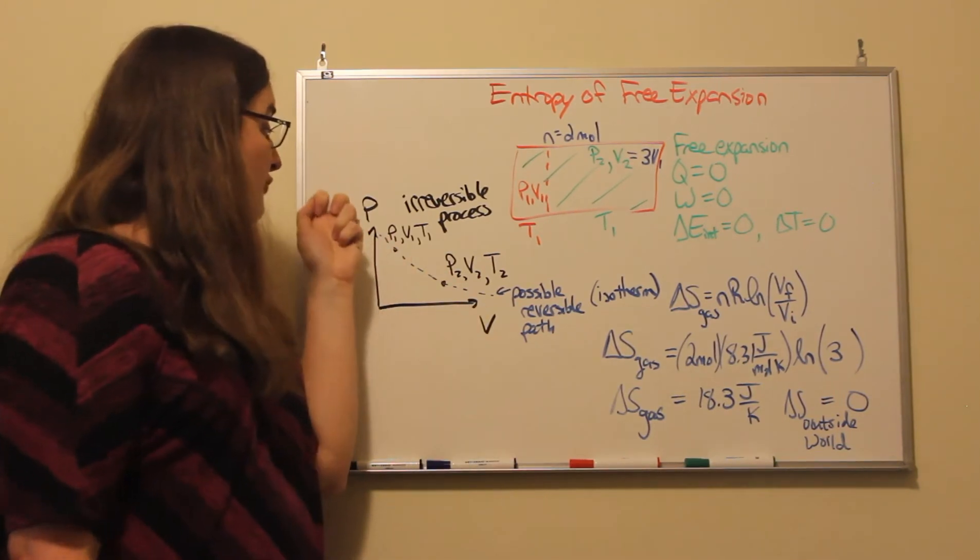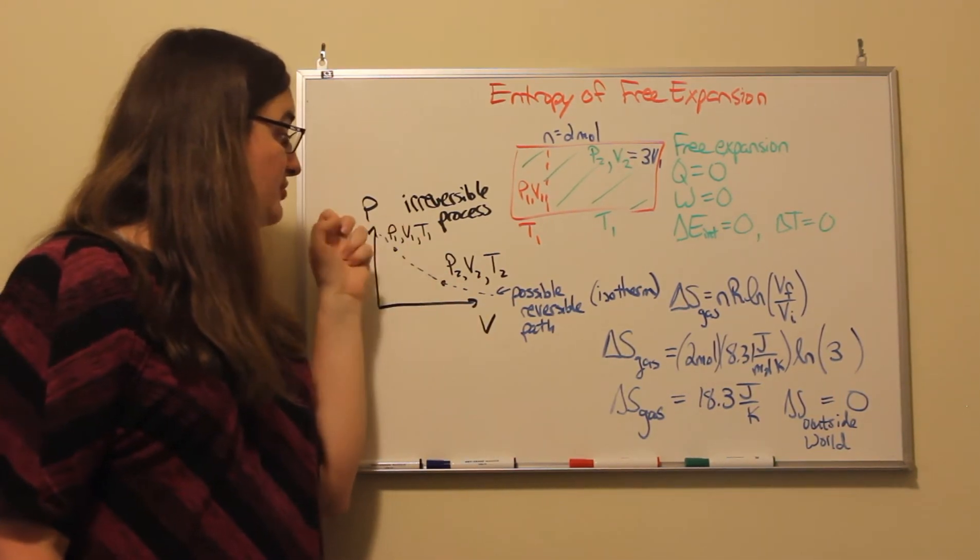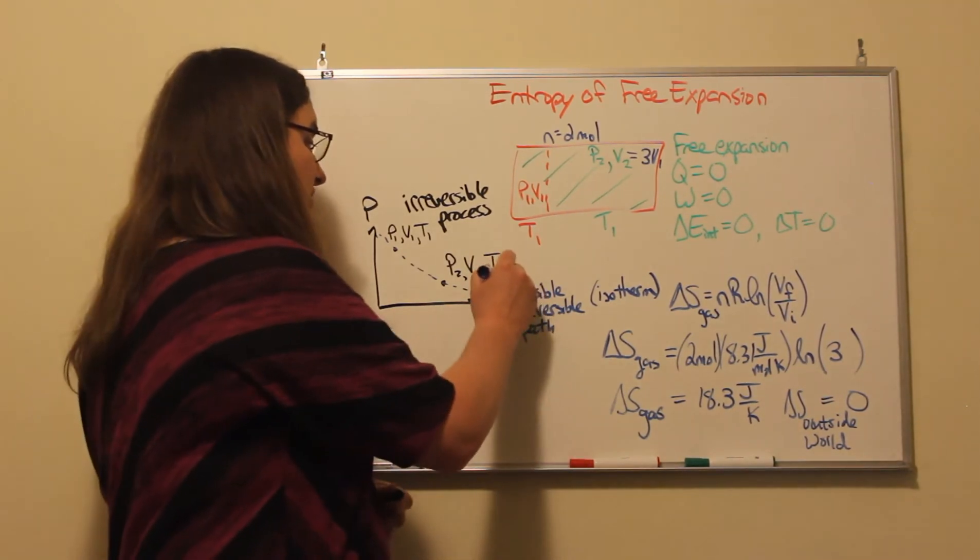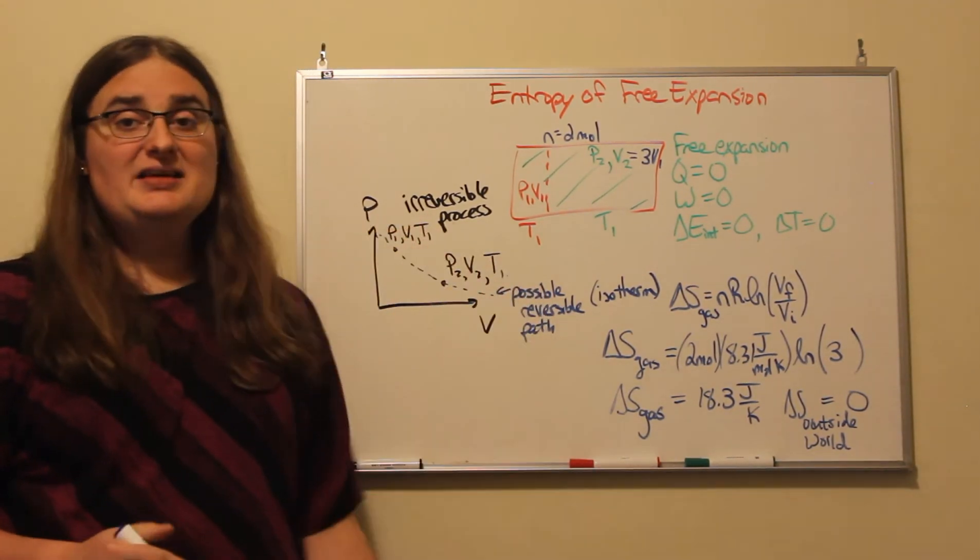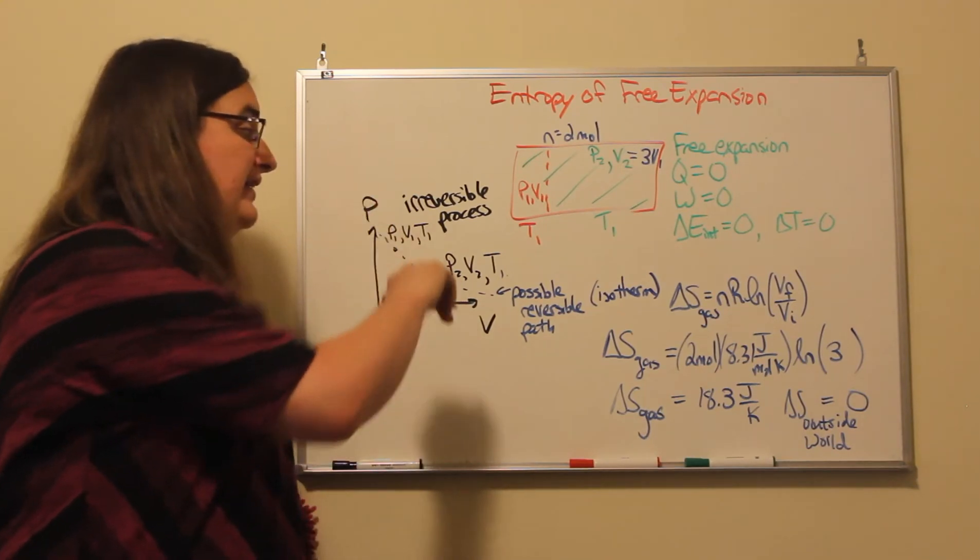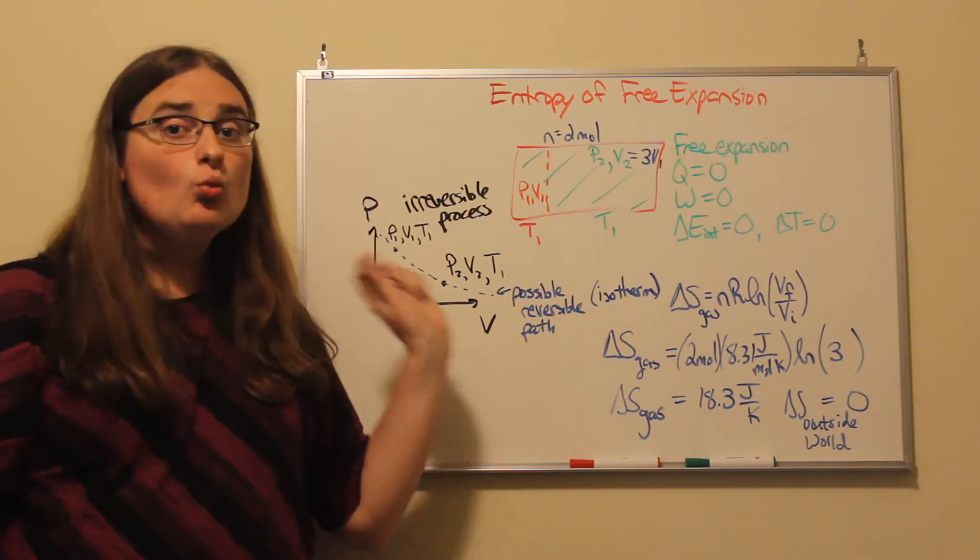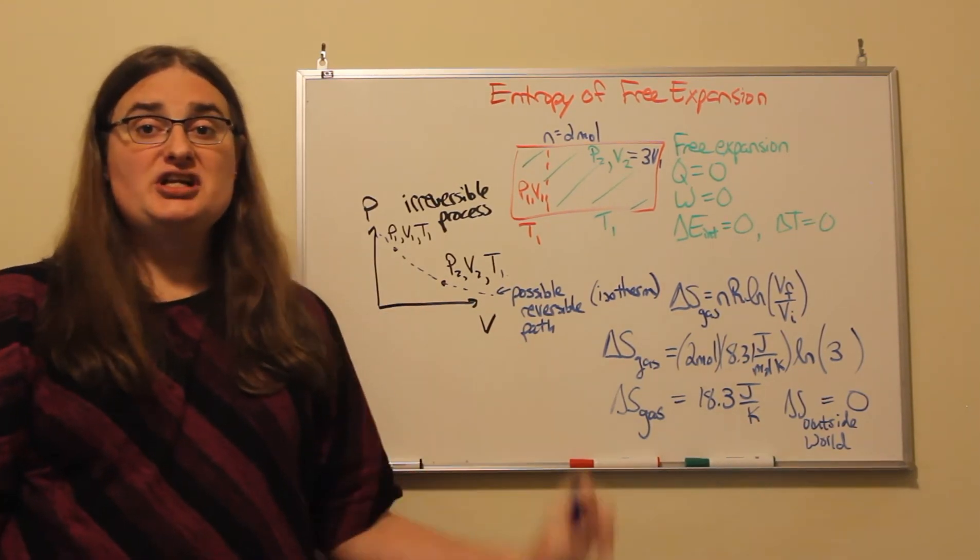For this model, if the temperature is the same, I could imagine choosing an isotherm at that temperature T1. I could calculate the change in entropy for an isotherm, and the gas would experience that change in entropy.